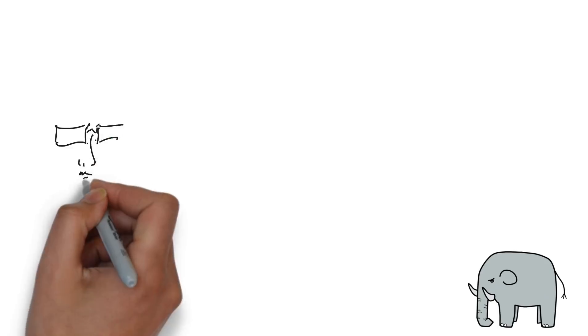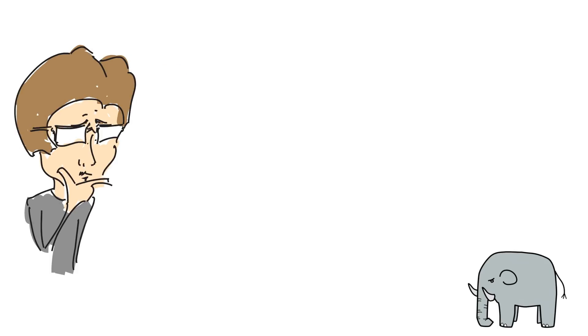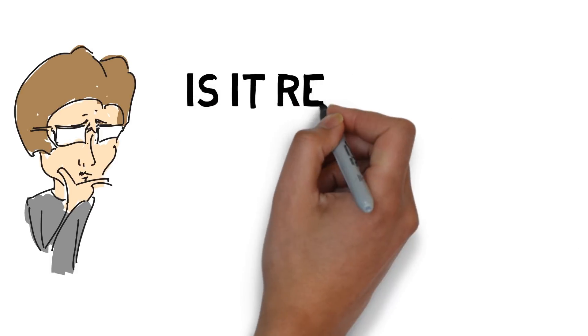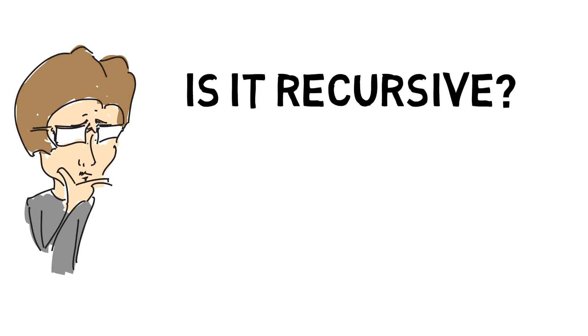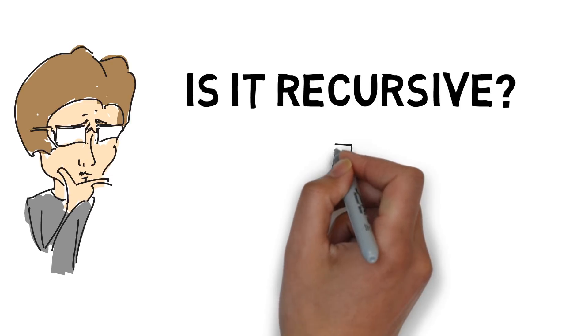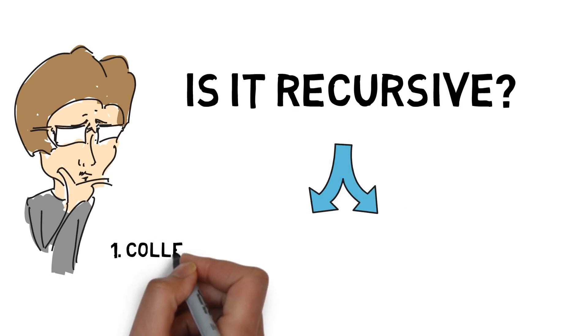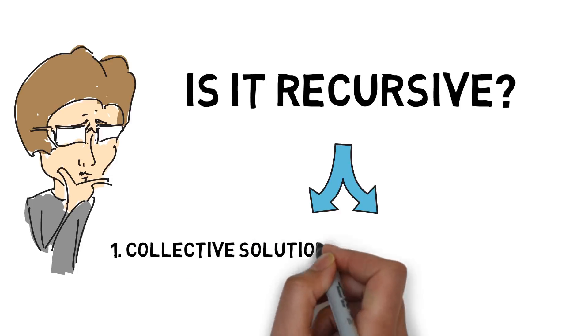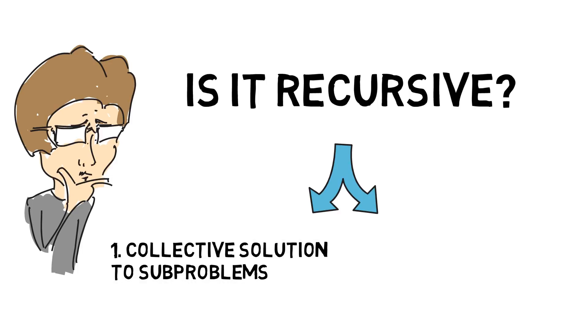But how do you know that you are standing in front of a recursive problem? That's easy. A problem should meet two criteria to be eligible for a recursive solution. First, the solution of the problem should depend on the collective solutions of subproblems to this problem. In our case, going from the most left to the most right of the road means moving step by step from lane to another using the mirror which covers only one lane.